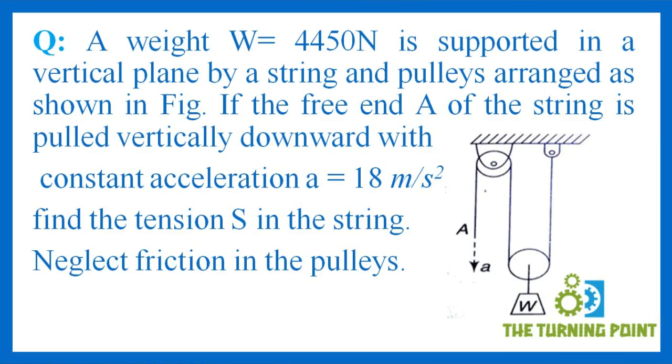A weight W equal to 4450 N is supported in a vertical plane by a string and pulleys arranged as shown in the figure. If the free end A of the string is pulled vertically downwards with constant acceleration a equal to 18 m/s², find the tension S in the string. Neglect friction in the pulleys.